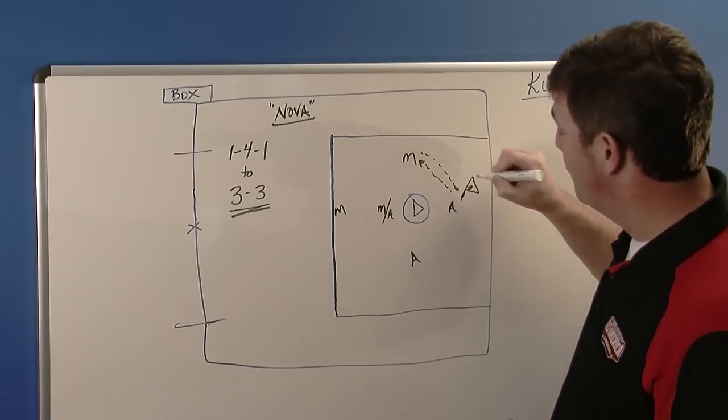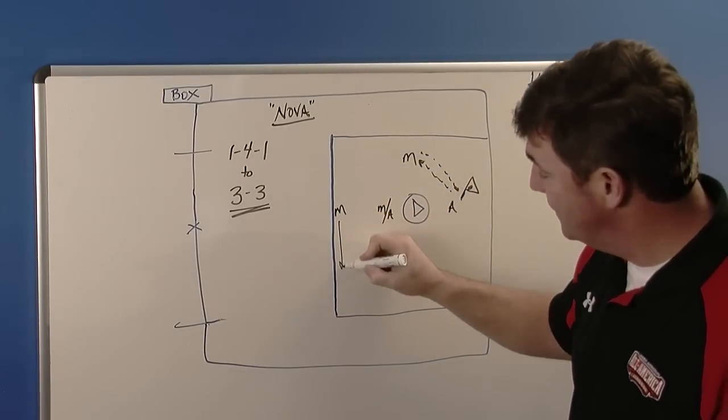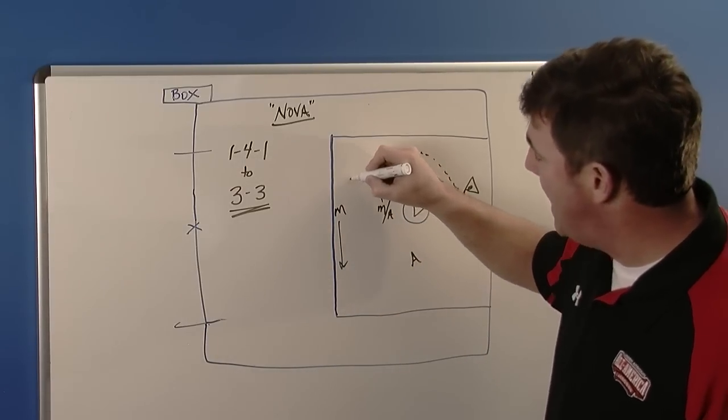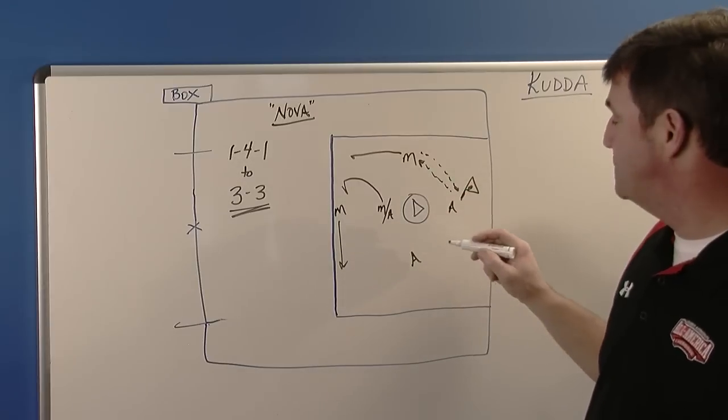This midfielder is going to get it quickly right back to that attackman. On that pass, this midfielder is going to reset down to this wing. This midfielder is going to pop off the crease and this midfielder is going to get back up to that top spot.